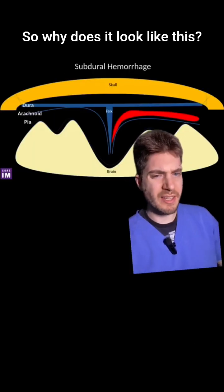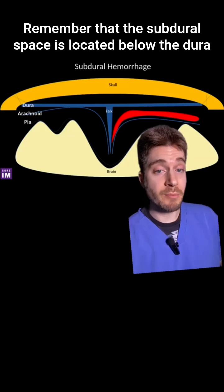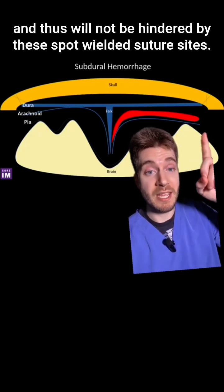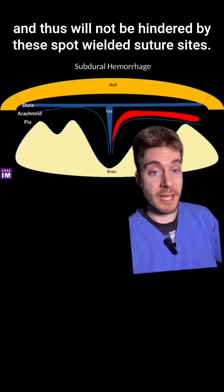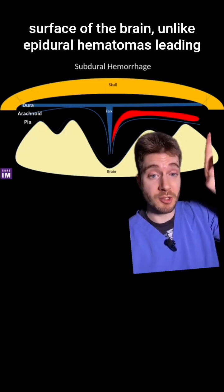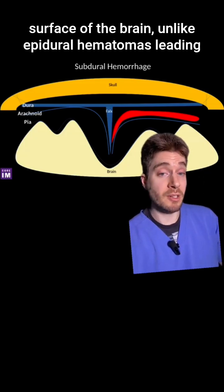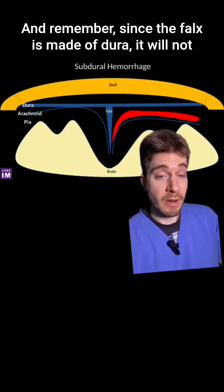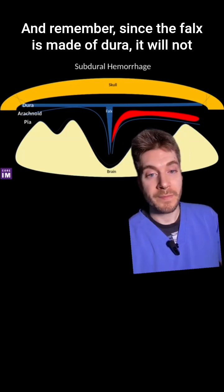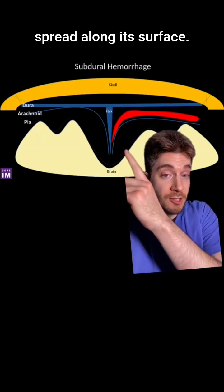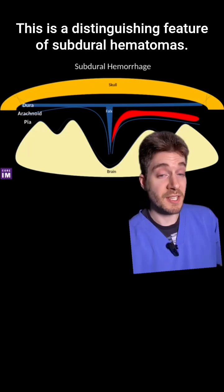So why does a subdural hematoma look like this? The subdural space is located below the dura and thus will not be hindered by these spot-welded suture sites. Therefore, subdural hemorrhages are free to spread across the entire surface of the brain, unlike epidural hematomas, leading to their crescentic shape. And since the falx is made of dura, the blood will not be able to cross the falx at the midline, but will rather spread along its surface — a distinguishing feature of subdural hematomas.